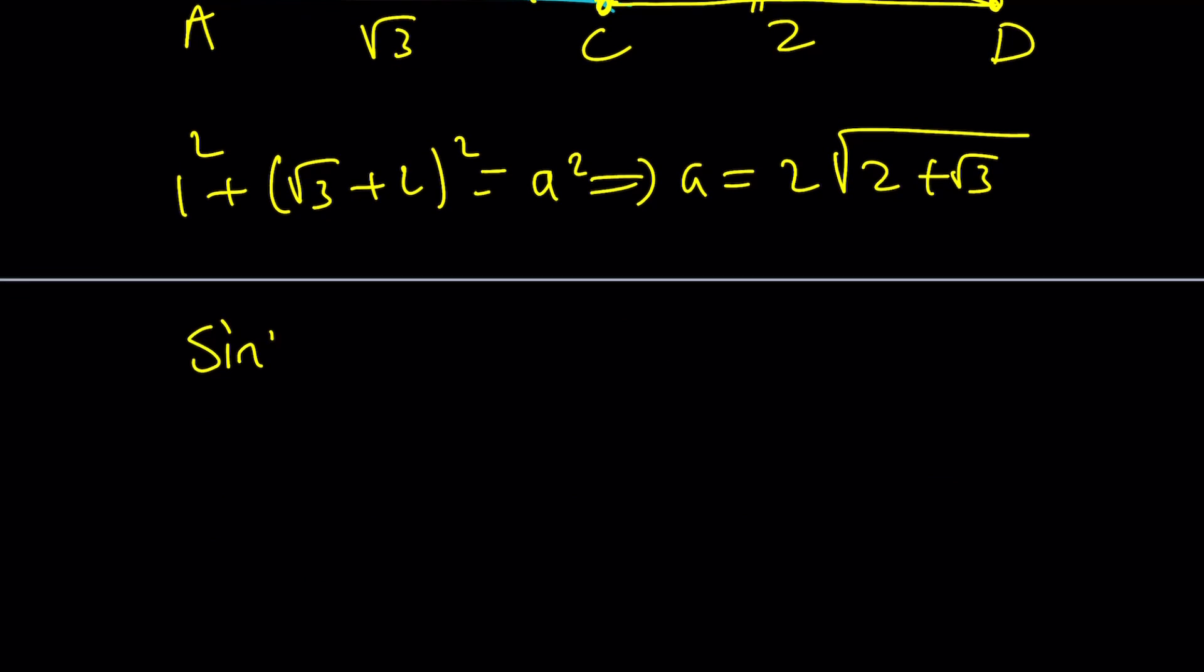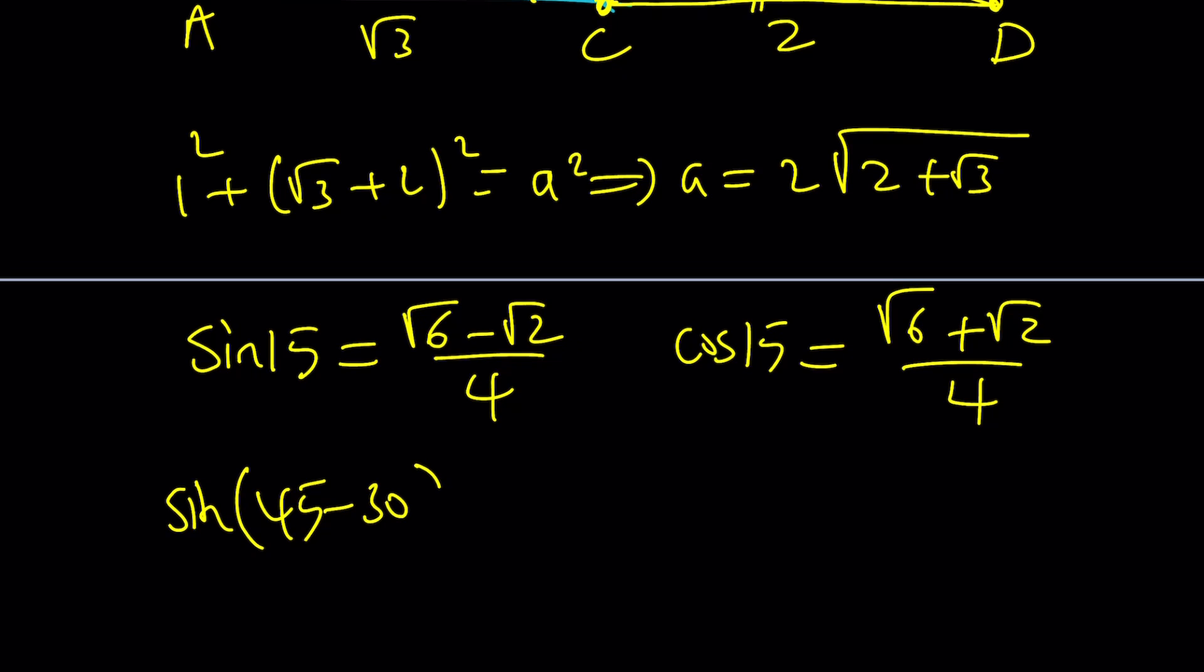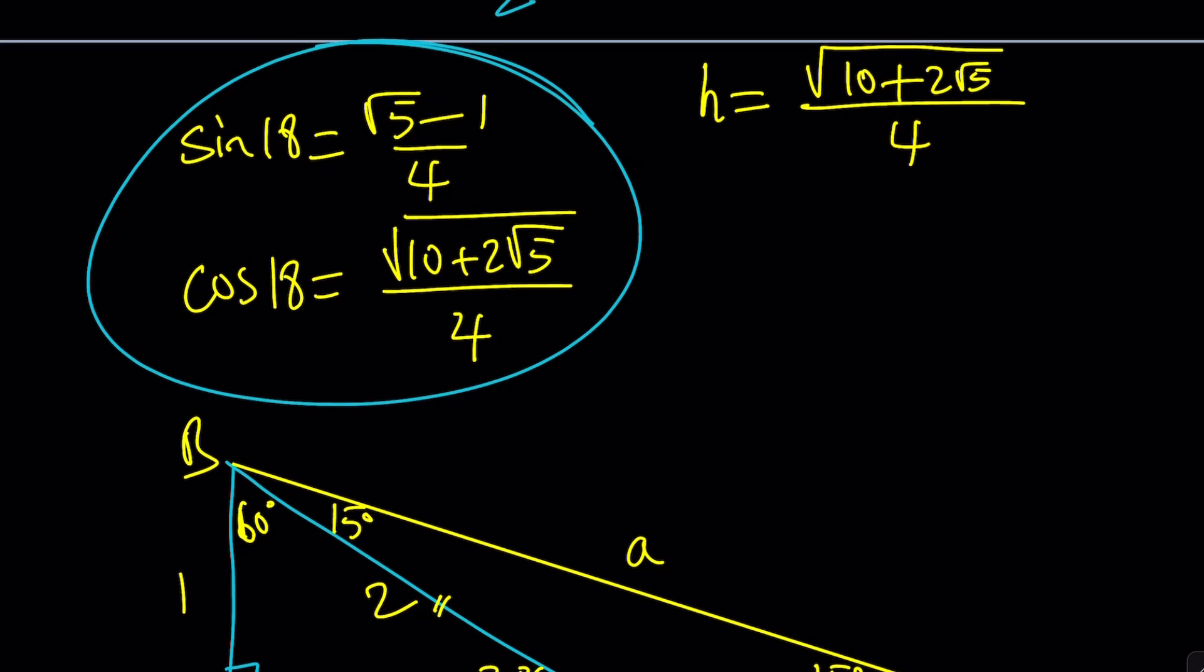From here, we can find sine 15 and cosine 15. To make it a little easier for you, let me just give those values. Sine 15 is root 6 minus root 2 over 4. Cosine 15 is root 6 plus root 2 over 4. You don't have to use this method. For example, you could use sine of 45 minus 30, in degrees, and then use the formulas. It would give you the same answer and probably a little faster. I got the 15, I got the 18. Let's put it together.